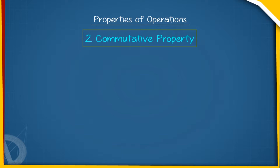2. Commutative Property: For rational numbers X and Y, X plus Y equals Y plus X, and X multiplied by Y equals Y multiplied by X.